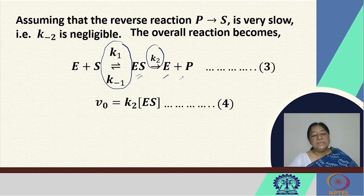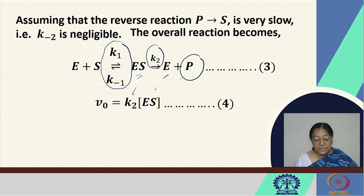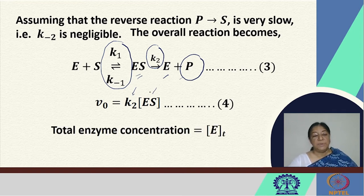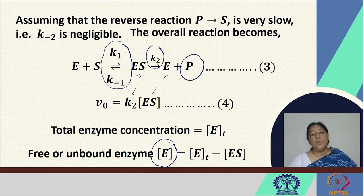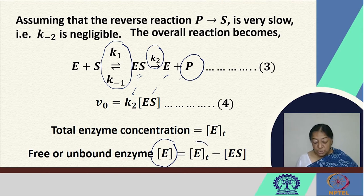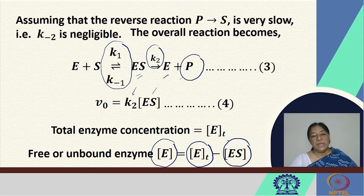The rate of product formation is therefore K2 multiplied by the concentration of the enzyme-substrate complex. The total enzyme concentration is ET, and the enzyme exists either in free form or in the bound ES complex form. So the free enzyme concentration equals the total enzyme concentration minus the ES complex concentration. From this relationship, we can study the kinetics of the enzyme.